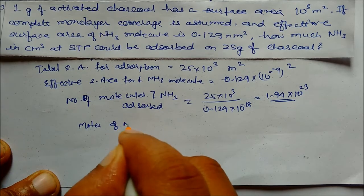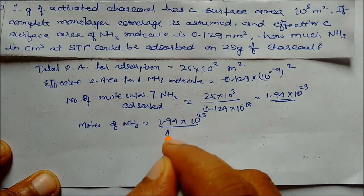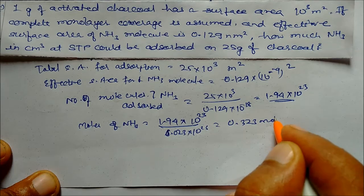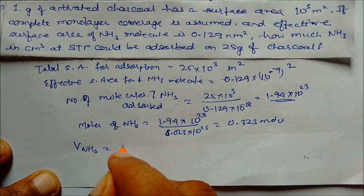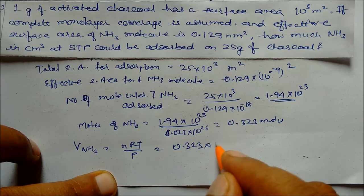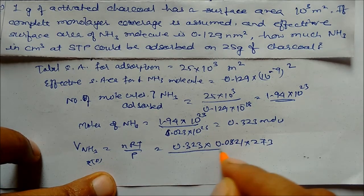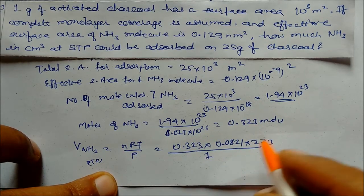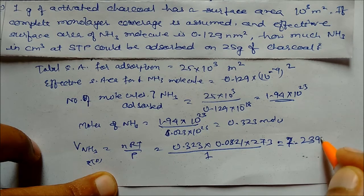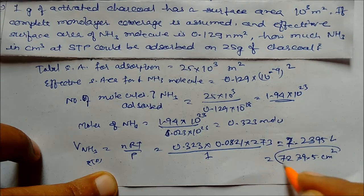Moles of ammonia: 1.94 into 10²³ divided by Avogadro's number 6.023 into 10²³ gives 0.3223 moles. Volume at STP: V equals nRT/P, where n is 0.3223, R is 0.0821, T is 273 K, P is 1 atm. This gives 7.2395 liters, or in cm³, 7239.5 cm³. This is our answer.